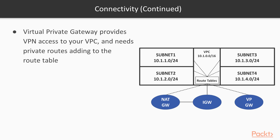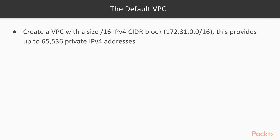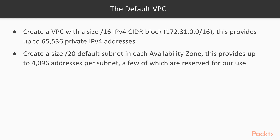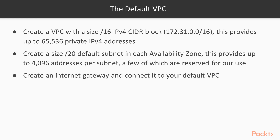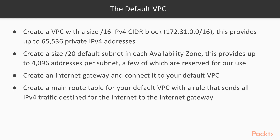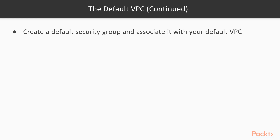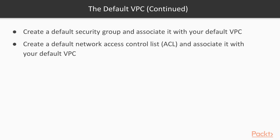All of these connect through a route table. Route tables are the way you manage connectivity across your subnets and inside and outside of your VPC. By default, when you create an account, you'll get a default VPC. A default VPC starts with 172.31 as a slash 16, giving you 65,000 private addresses. Depending on what region you deploy into, you'll get subnets starting with slash 20. In London, for example, there are three availability zones, so you get three subnets. It will also create an internet gateway, a main routing table, and a default security control list.